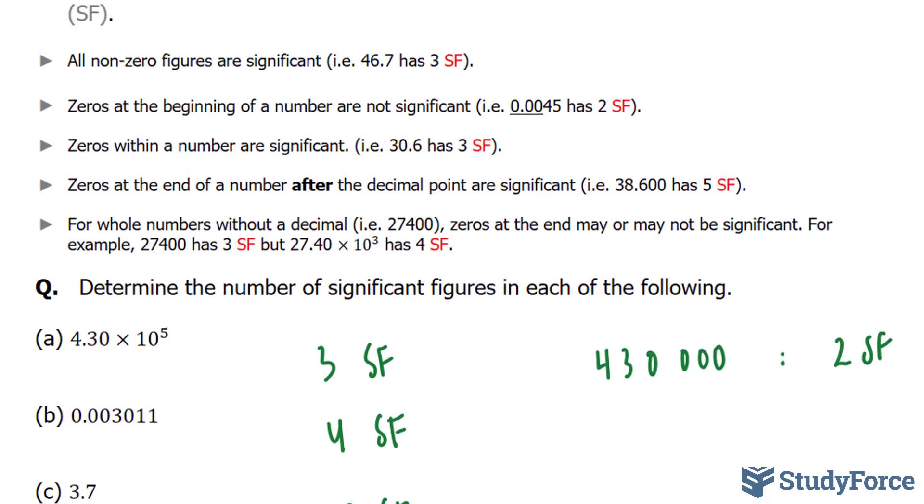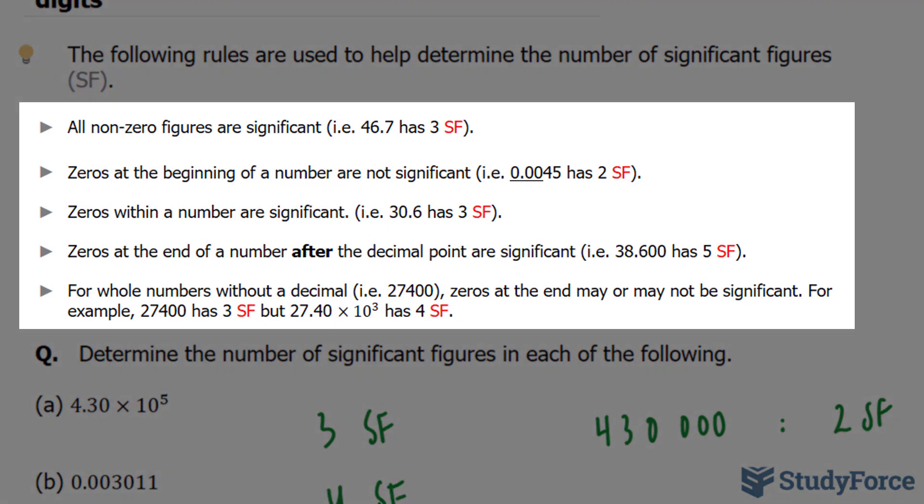So let's review these rules once more. All non-zero figures are significant. So in our case here, 46.7, we have three significant figures.